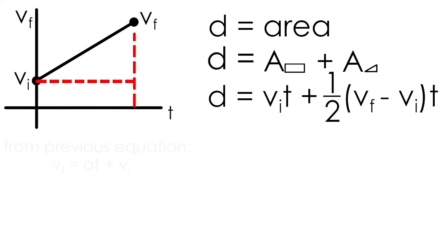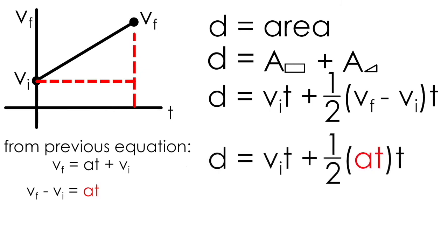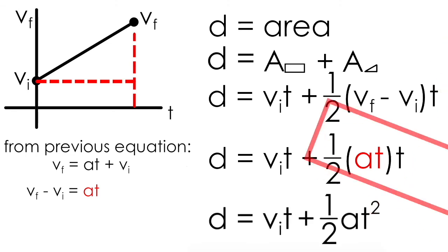So we have a nice complex looking formula that we can actually simplify slightly. We know from our first equation that vf equals at plus vi. Rearranging this equation by bringing vi over to the other side results in vf minus vi equals at. So instead of having vf minus vi in our equation, in its place we could substitute a times t.